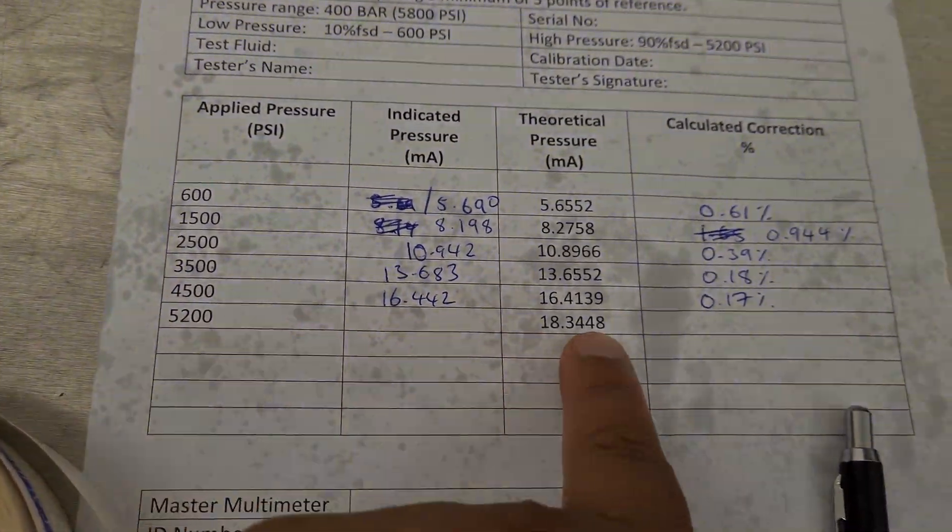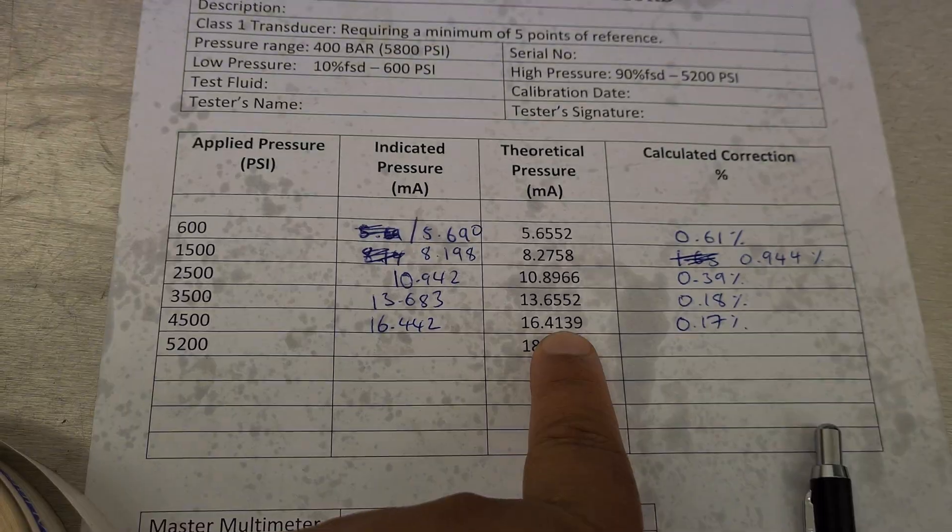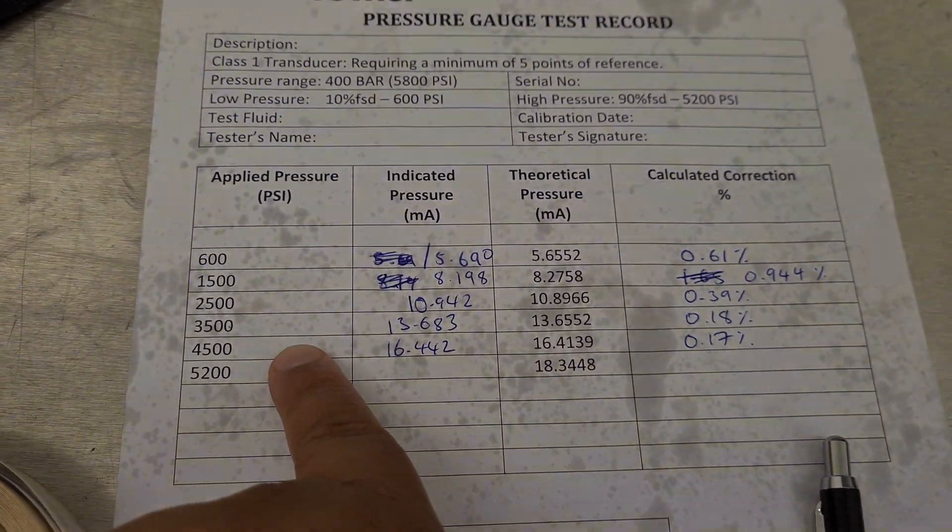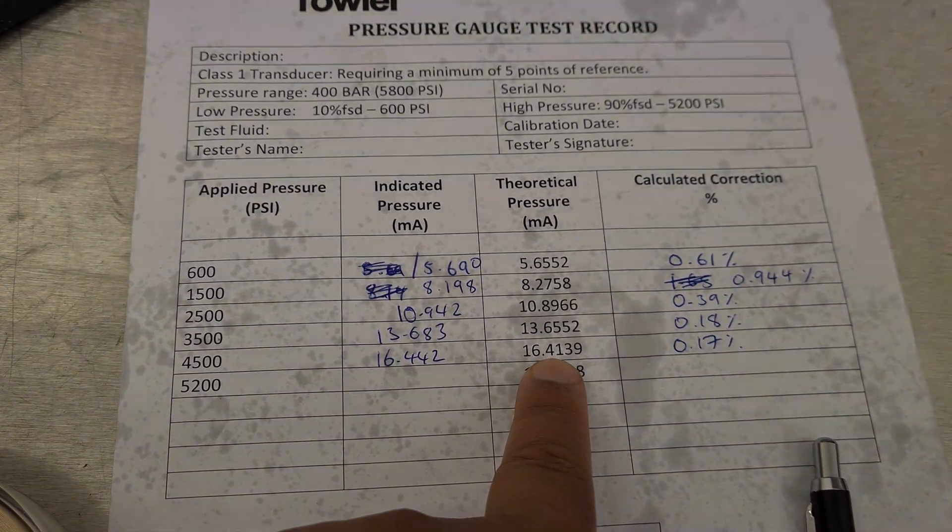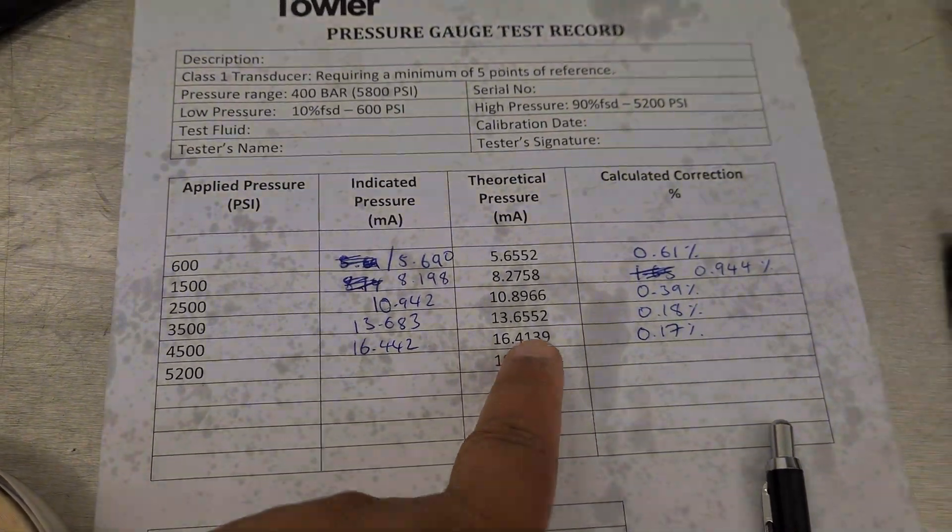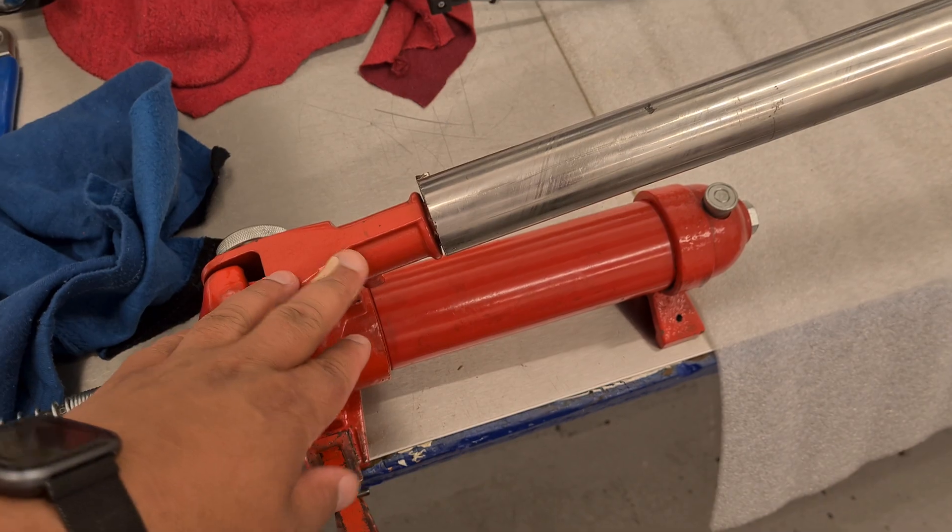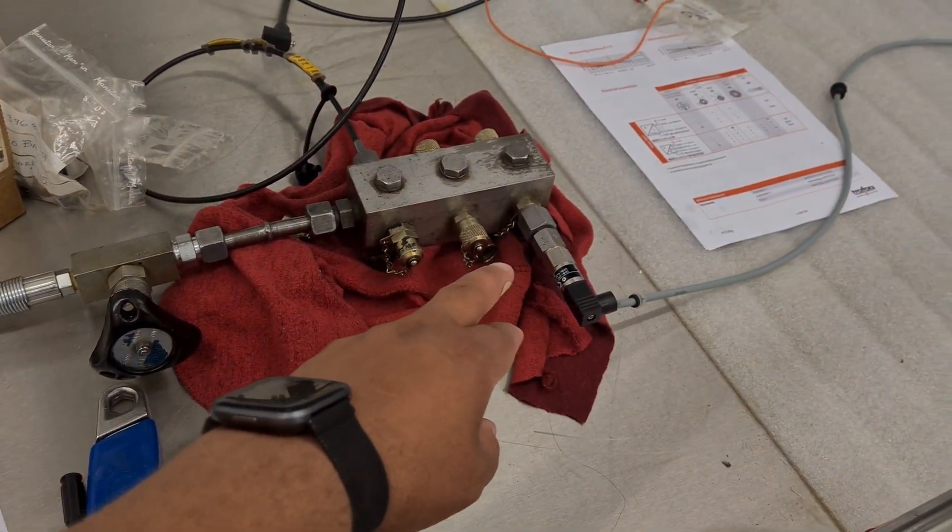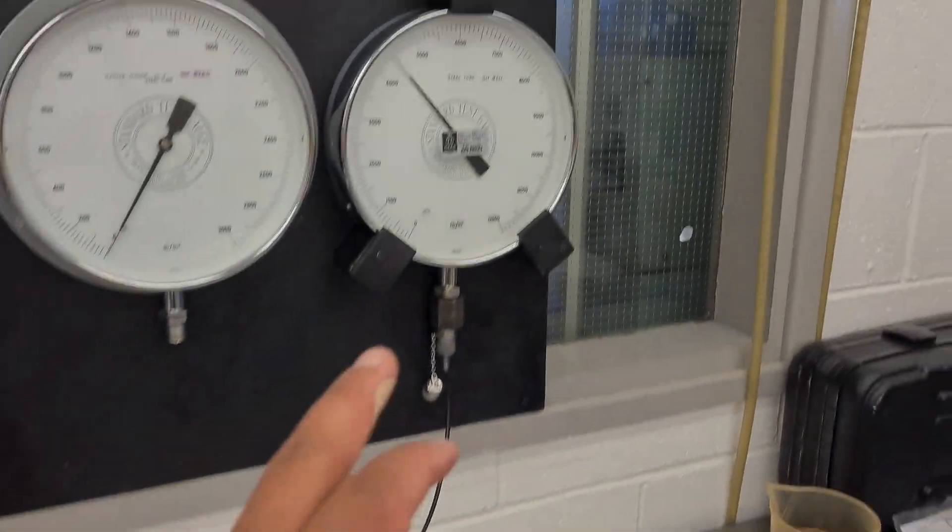And I know what I'm expecting to get, what current. So at 4,500 PSI I'm expecting 16.41 milliamps. And so what I do is I use this hand pump here to pressurize the transducer and I'm measuring it there on here.